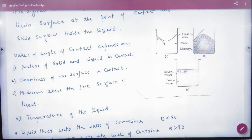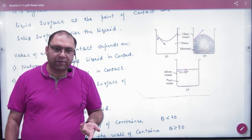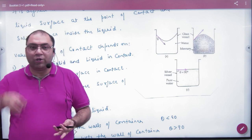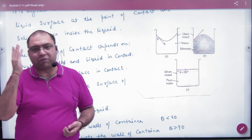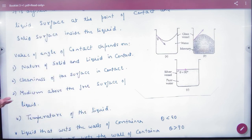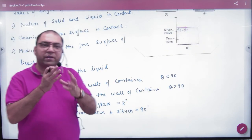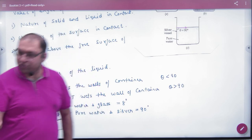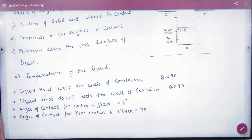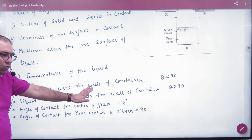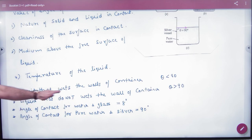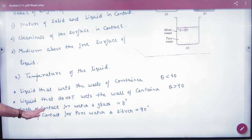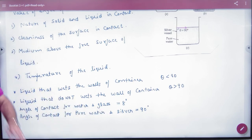Second factor: cleanliness of the surface. If you put grease on a glass beaker, the grease molecules change the interaction and the angle of contact changes. Third: the medium above the free surface of the liquid — if we replace air with another medium, the forces change and so does the angle of contact. Fourth: temperature of the liquid — temperature moves molecules, thermal energy changes, and the angle of contact changes. Key facts: the liquid that wets the container walls has angle of contact less than 90 (like water); mercury has angle greater than 90. Normal water and glass gives about 8 degrees; pure water and silver gives 90 degrees — a flat meniscus.